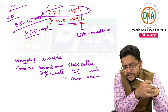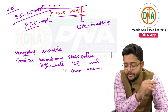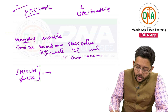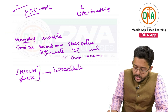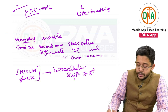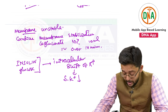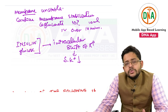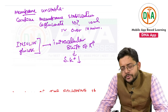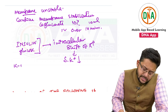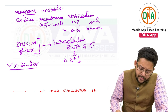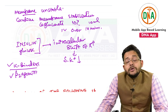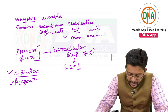Calcium gluconate doesn't decrease potassium and is short-lasting — about 45 minutes to one hour — so we also need hypokalemic measures. Insulin and glucose cause intracellular shift of potassium, decreasing serum potassium. Other methods include K-bind sachets (polystyrene sulfates that bind potassium in the GI tract and decrease absorption), and beta-2 agonists like salbutamol as nebulization, which also cause intracellular shift of potassium.